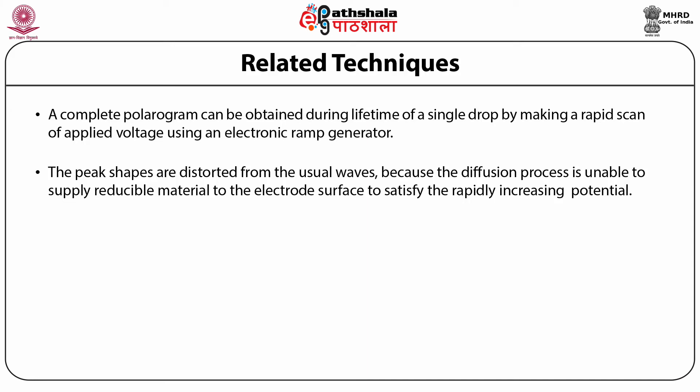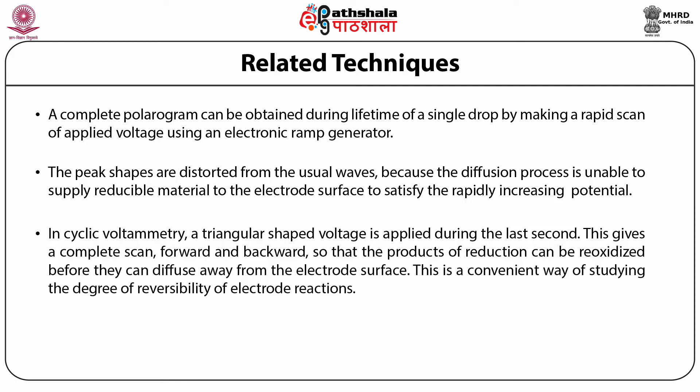Another related technique, extensively used for the determination of reaction mechanisms of different types of organic compounds, coordination complexes, and various types of reactions — including elucidation of the structure of organic compounds — is cyclic voltammetry. In cyclic voltammetry, a triangular-shaped voltage is applied during the last second or so before the drop falls. This gives a complete scan forward and backward so that the products of reaction can be re-oxidized before they can diffuse away from the electrode surface, providing a convenient way of studying the degree of reversibility of the electrode reaction.